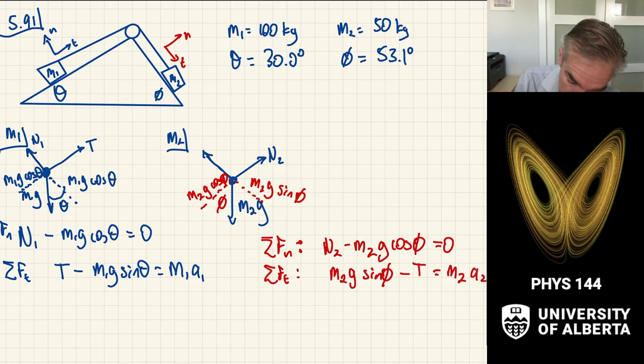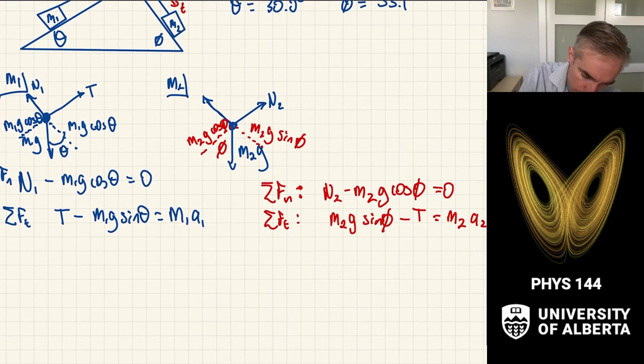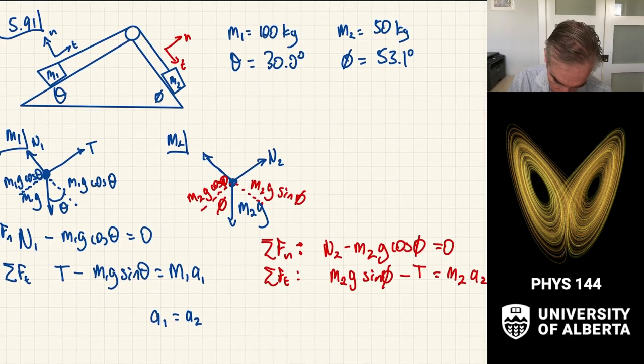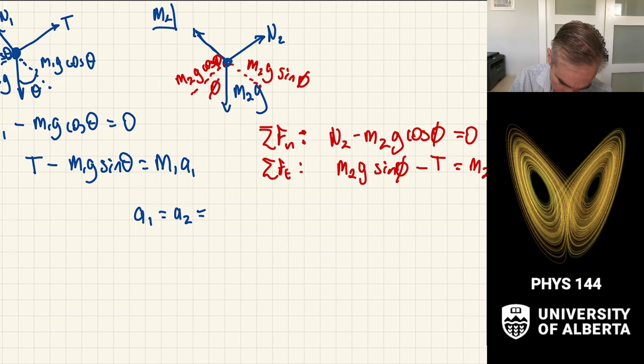So an important thing to note what happened here is that I've picked a coordinate system, Nt there and an Nt there, so that the tangential directions kind of agree with each other. If M2 moves in the positive t direction for its coordinate system, M1 moves in the positive t direction for the M1 coordinate system. Thus, I can make the association in these coordinates that A1 is going to have the same magnitude as A2, and for simplicity, I will just call that A. The other thing that we get out of a block and tension system is that the tensions are the same throughout this scenario.